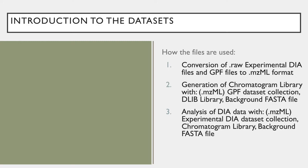The last two datasets required are a DLIB spectral or PROSIT library and a background FASTA file. These two inputs are both required in addition to the GPF dataset collection in generating the chromatogram library. Once the chromatogram library is generated, it will take the place of the DLIB input library, and along with the background FASTA file, it will be used in the quantitative analysis of the experimental DIA data.